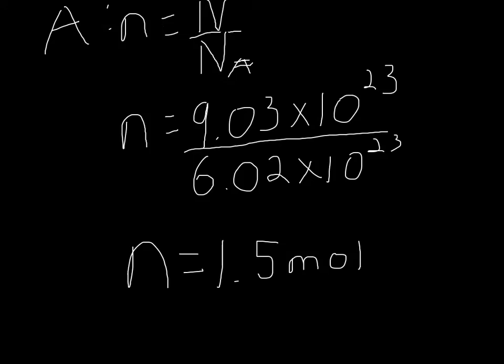First, we have the formula listed out, which is number of moles equals number of molecules over Avogadro's number. So we fill in our formula: 9.03 times 10 to the 23rd over 6.02 times 10 to the 23rd, and we calculated it out to be 1.5 moles.